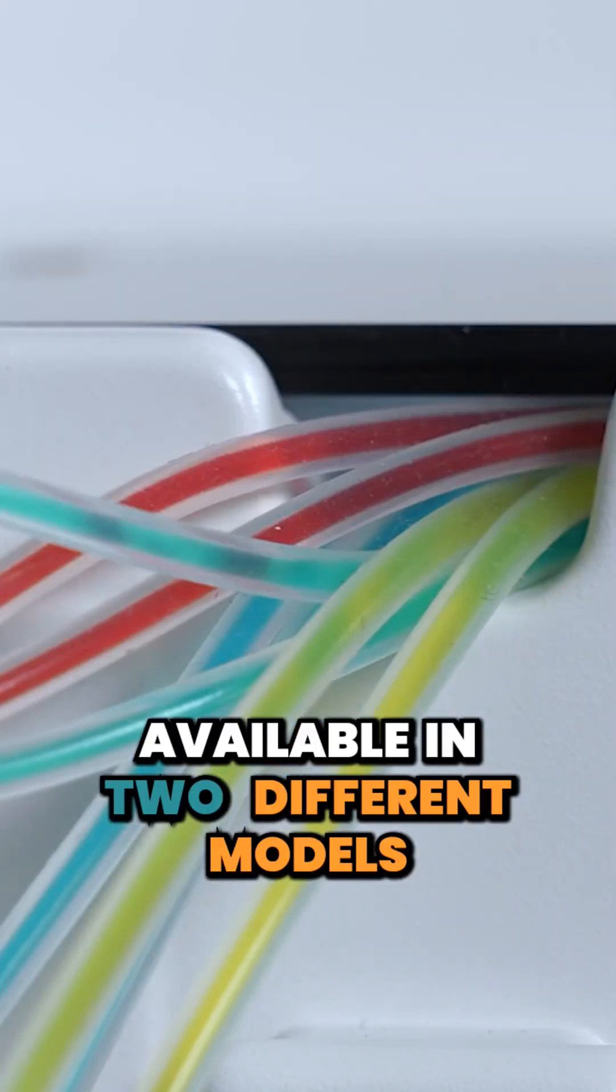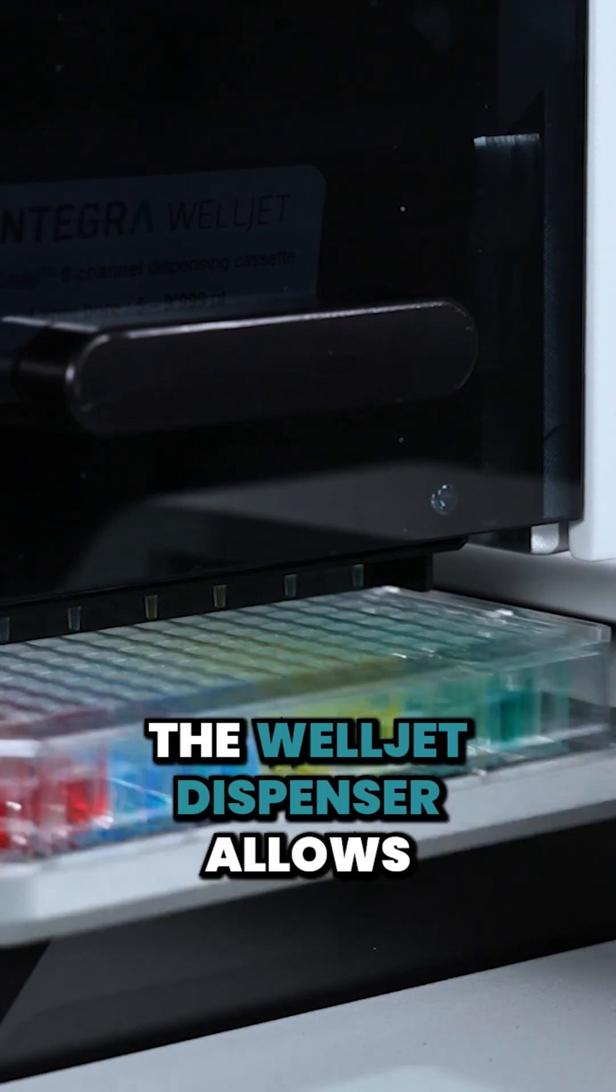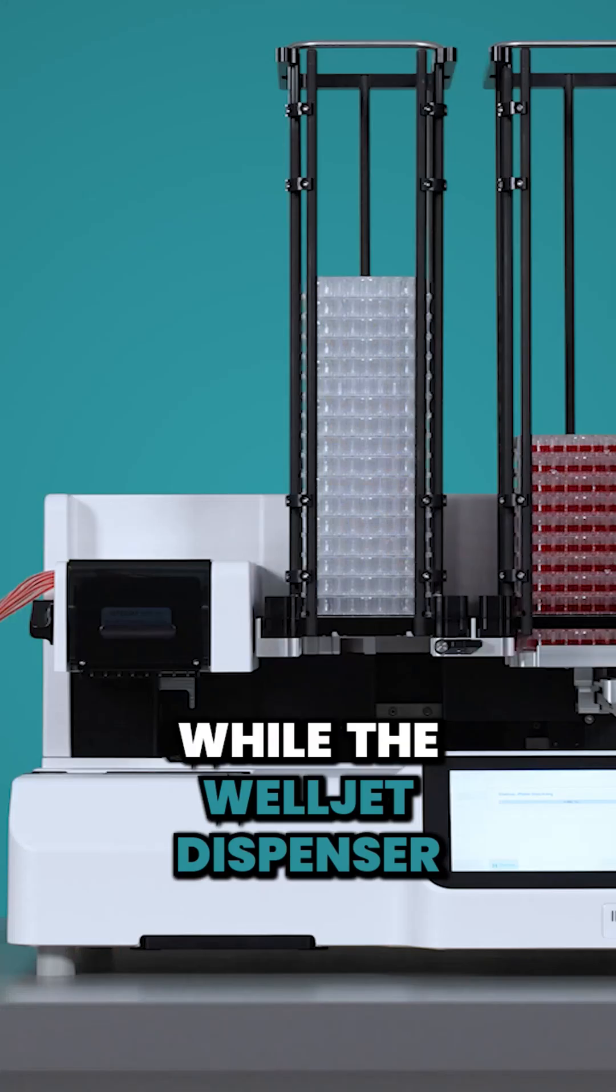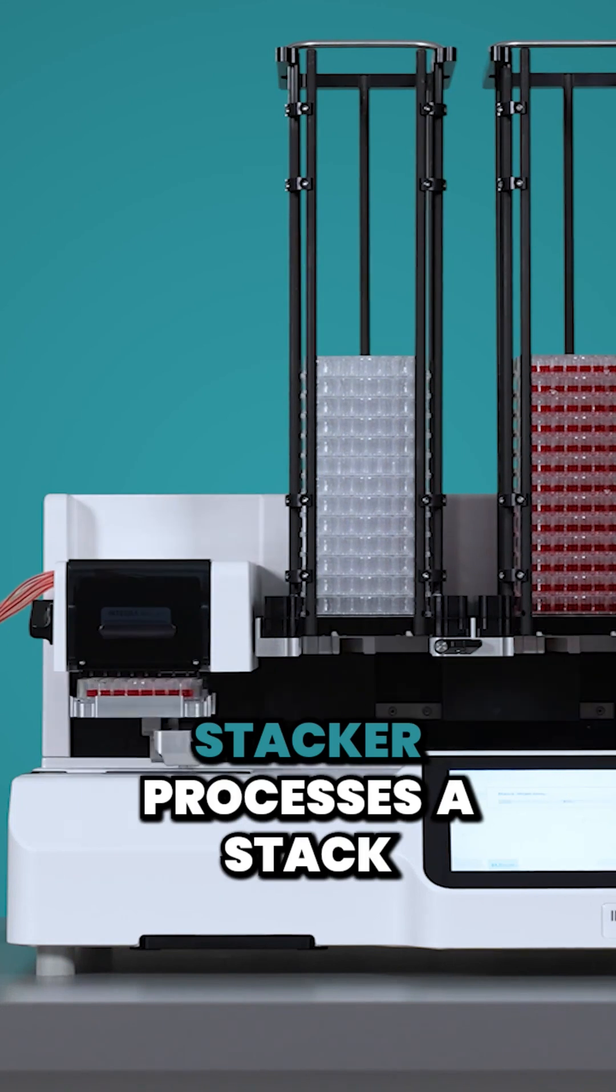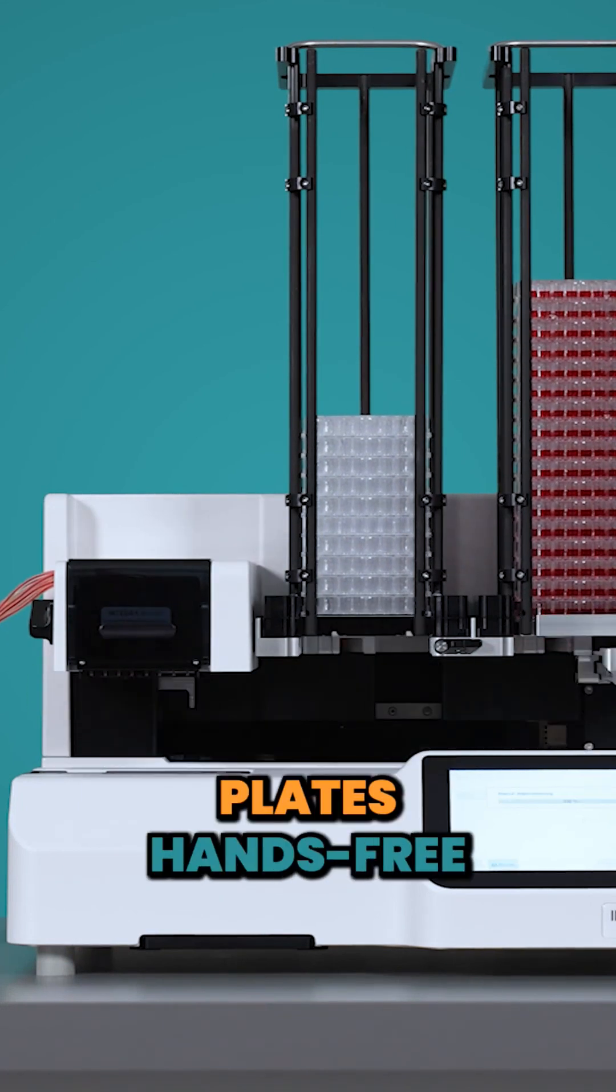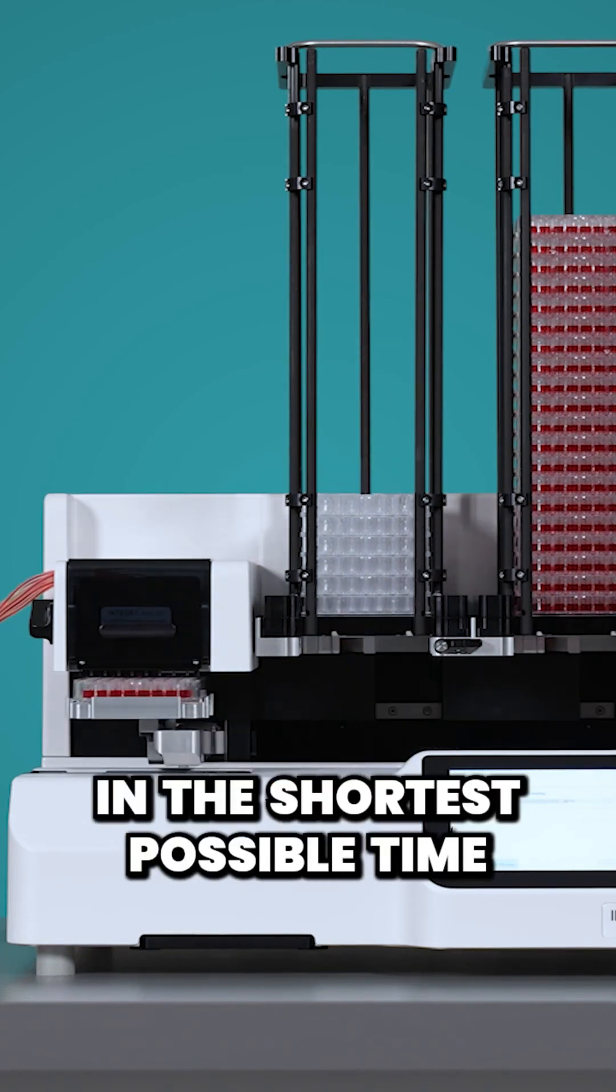Available in two different models, the WellJet Dispenser allows individual microplates to be filled quickly, while the WellJet Dispenser stacker processes a stack of up to 50 plates hands-free in the shortest possible time.